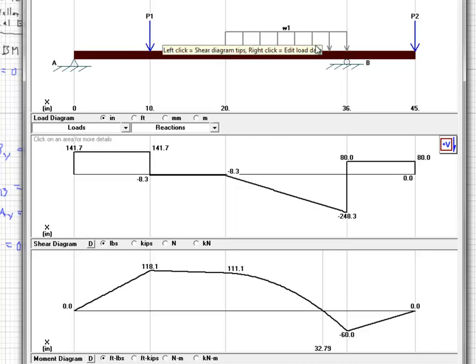Then the distributed load changes the shear force consistently over time. Its total load is 240 pounds. So, we reduce this from negative 8.3 to negative 248.3 pounds. But then we have the reaction at B, which brings us back up to 80 pounds. Then there's no load here. So, we have a consistent shear force here. Till we reach the very end where the applied load of 80 pounds brings it back down to zero.